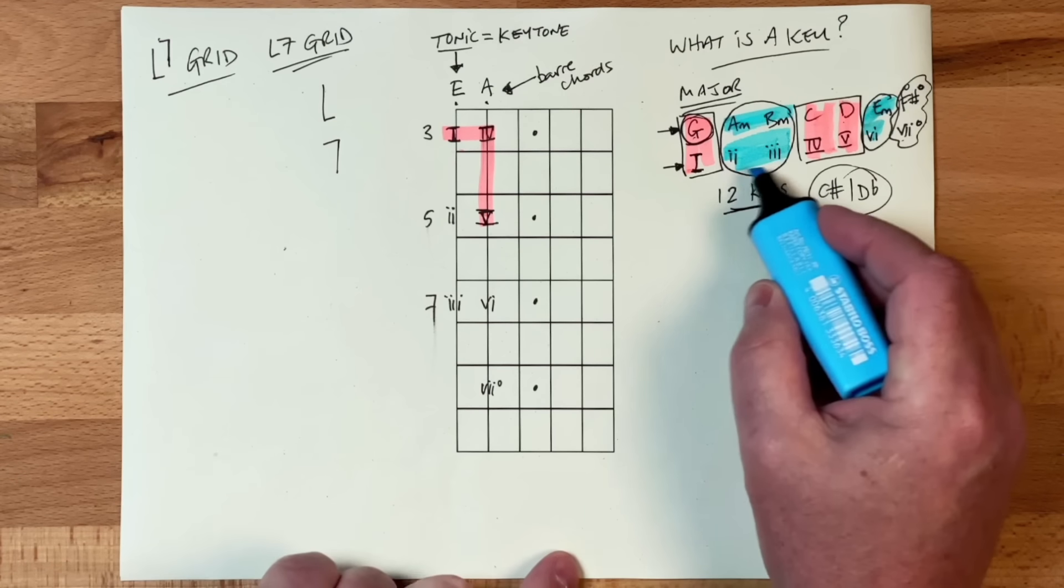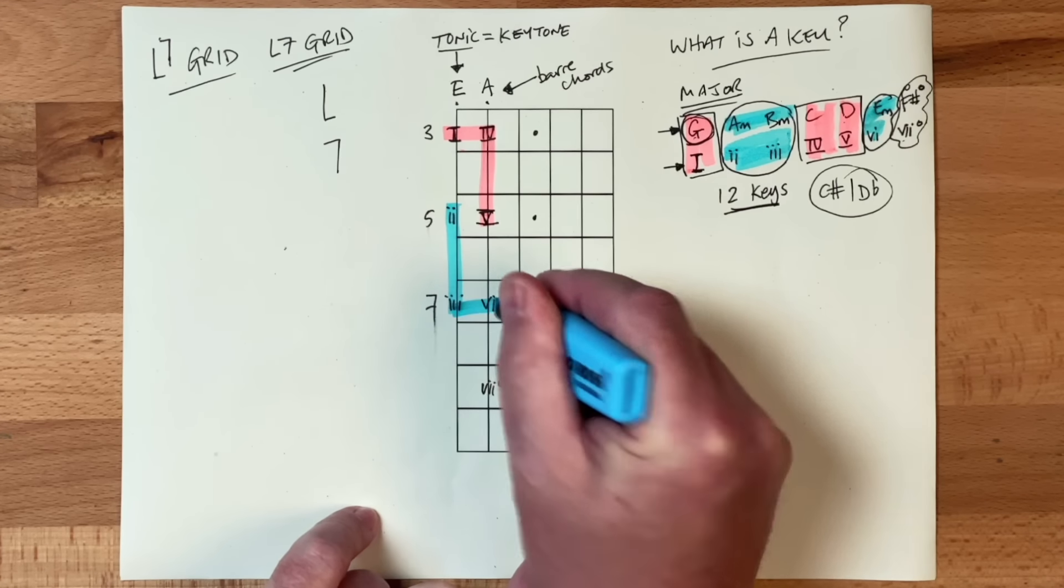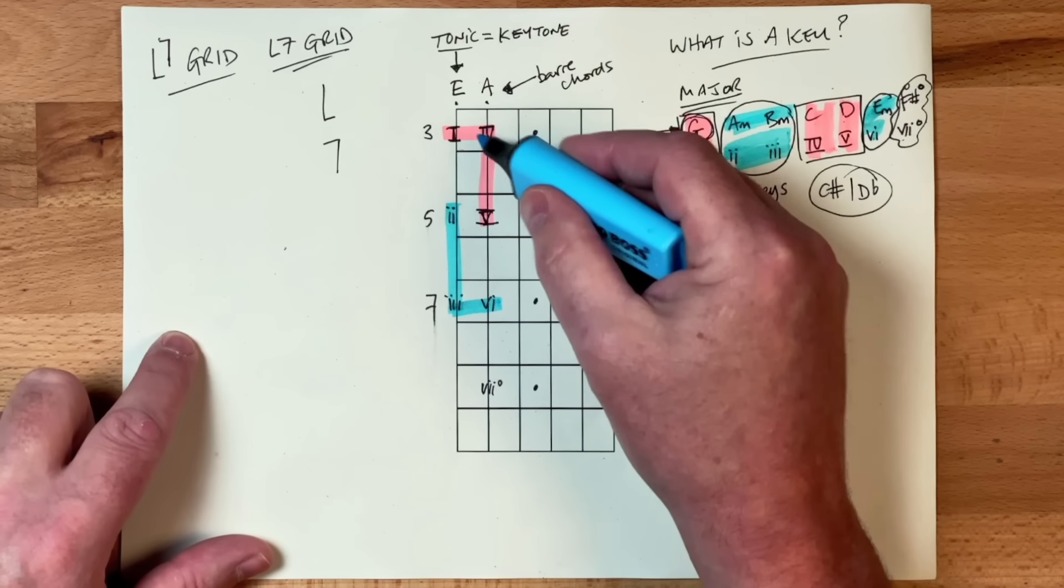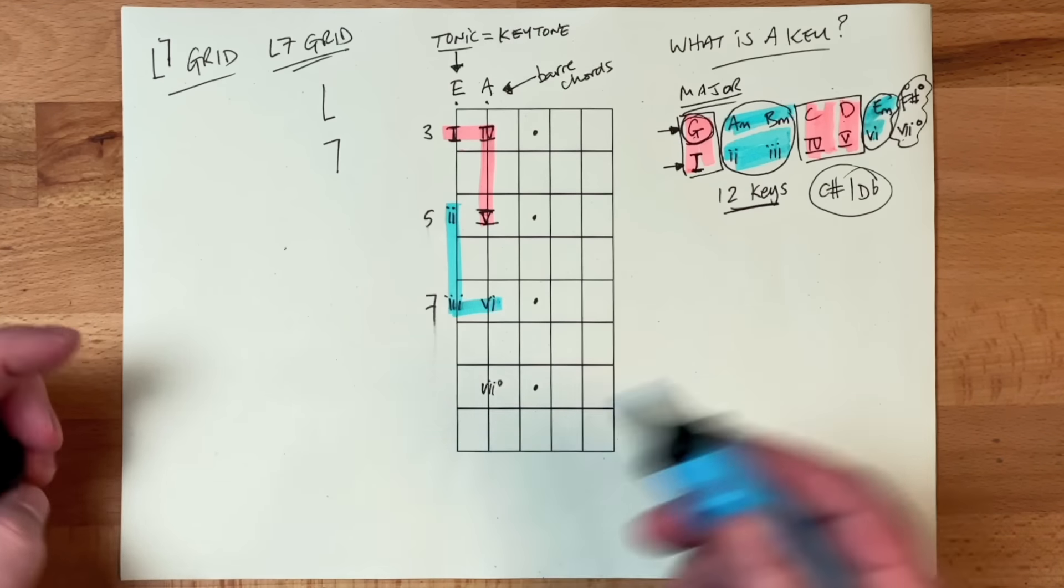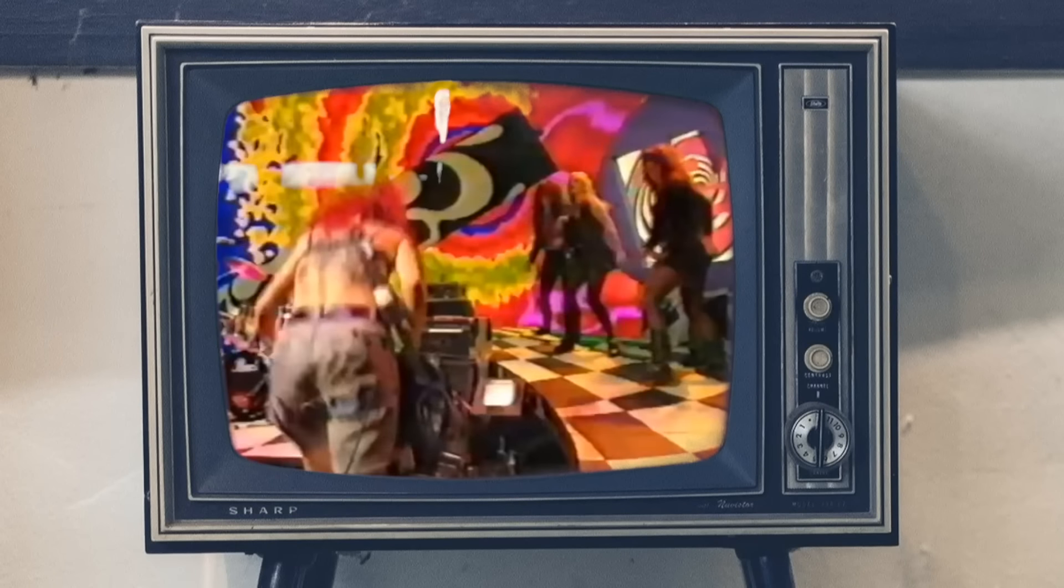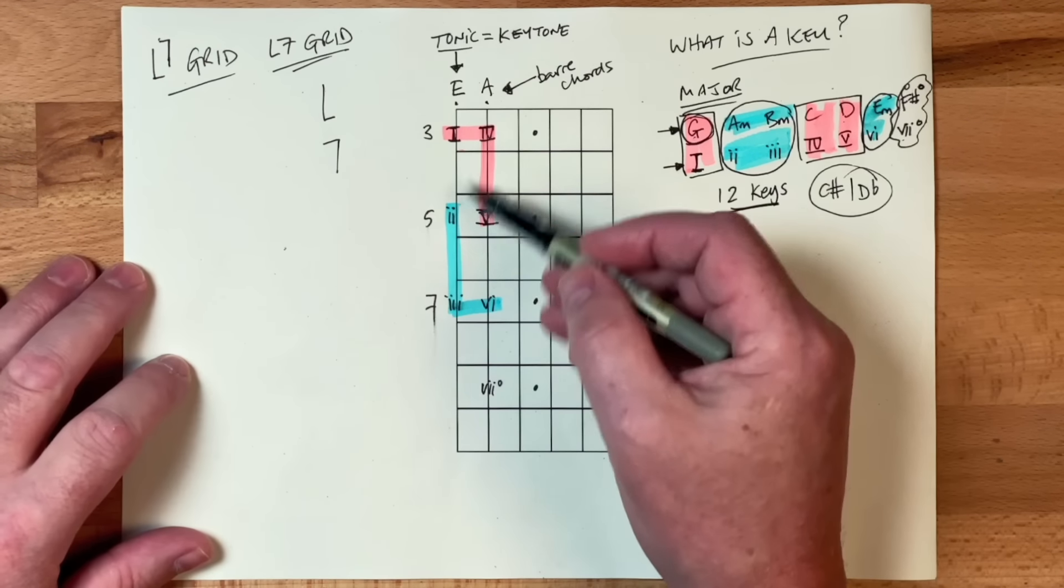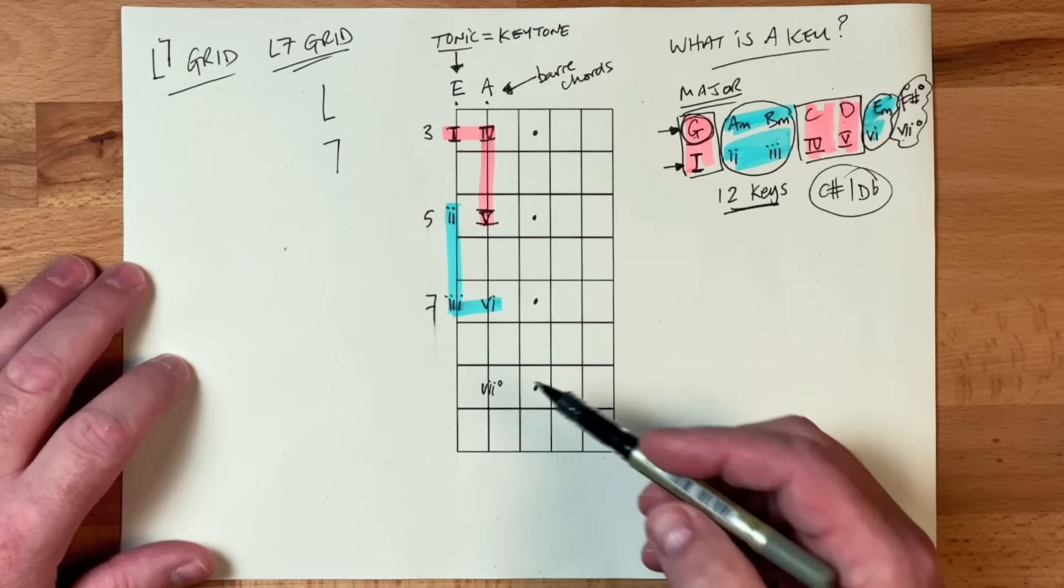What we need to do is we need to sort out these ones here, two, three, and six. Hopefully you can see this L7 business here. I remember that band L7 from the 90s, you know, that all girl grunge band. I like their music. This is why it's stuck. And that's what it does, guys. It just looks like an L and a seven. There's the L, there's the seven. Like I say, we could be agnostic about the key.